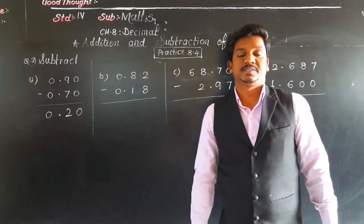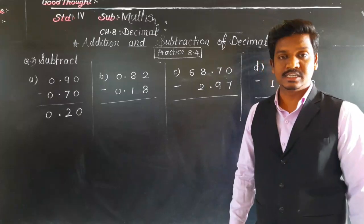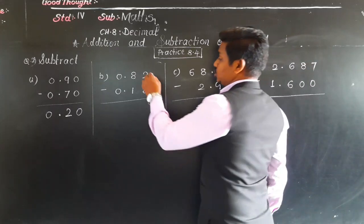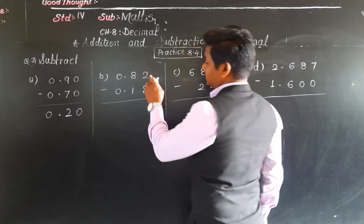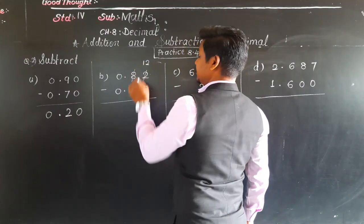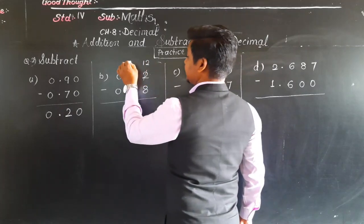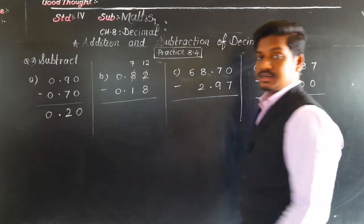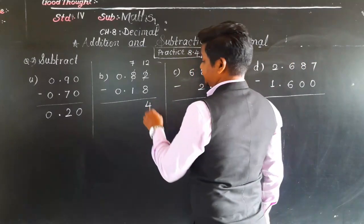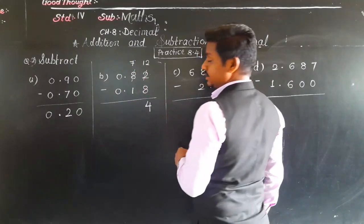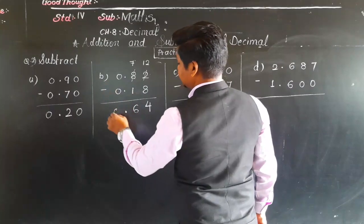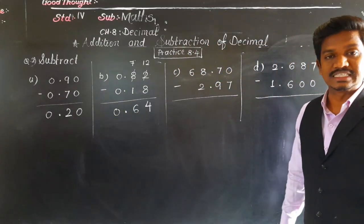Second example: 2 minus 8. See here, 2 minus 8. Is it possible? No. Then we can take borrow here. Here also we can take borrow. So 2 minus 8 not possible because 2 is smaller than 8. So what we are going to do? From this 8 we will take 1 borrow here. 2 will be written out, so 2 will become 12. 8 will remain 7. Understand? 12 minus 8 - what is 12 minus 8? 4. 7 minus 1 - what is 7 minus 1? 6. 0 minus 0 is 0. So I answer it 0.64.